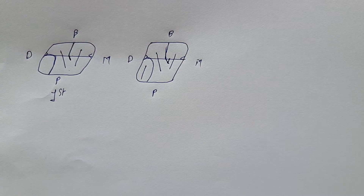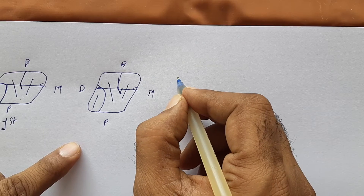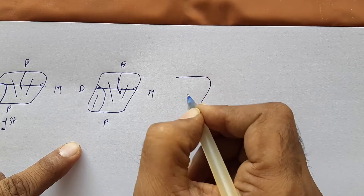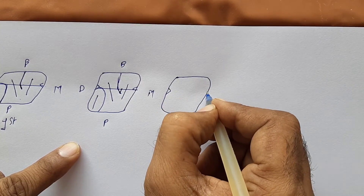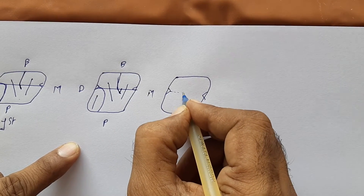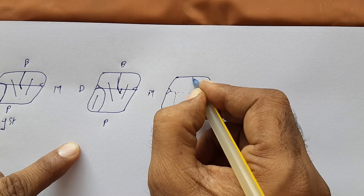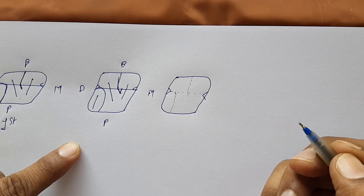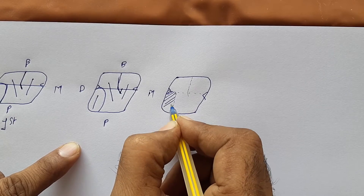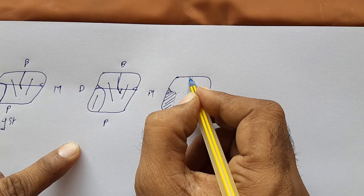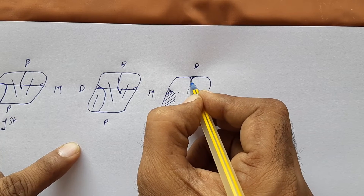Now consider the distopalatal cusp is not there in the heart shape molar. Consider this is your normal tooth of a maxillary second molar. This is your triangular fossa, this is the central groove, this is your distopalatal cusp. These are the buccal developmental grooves — and then you remove this part.